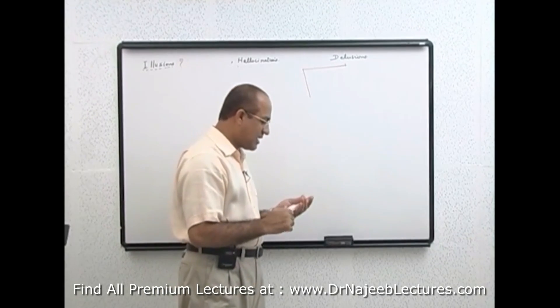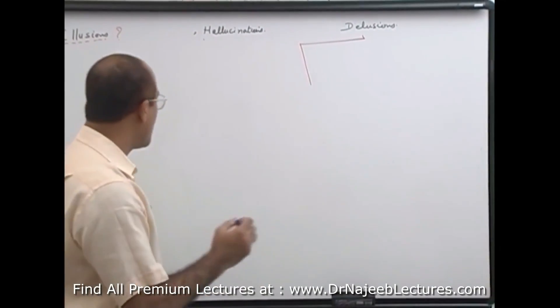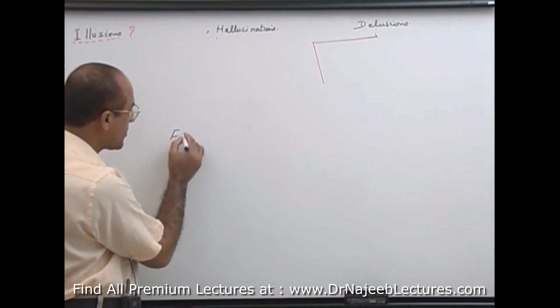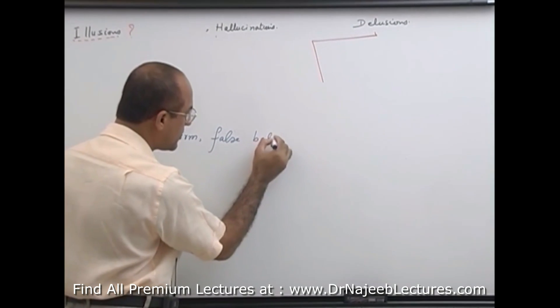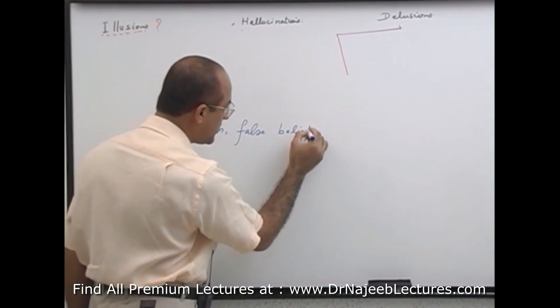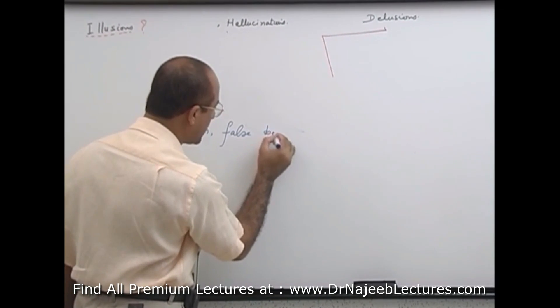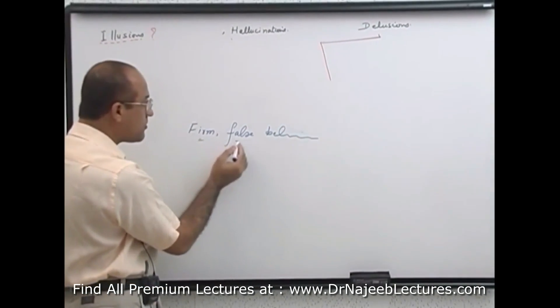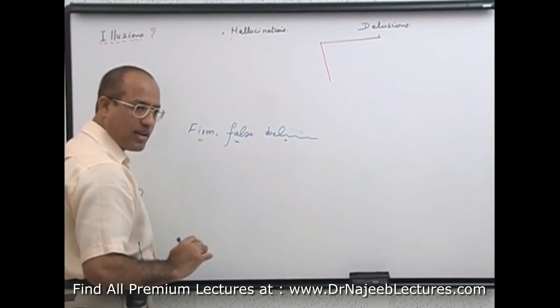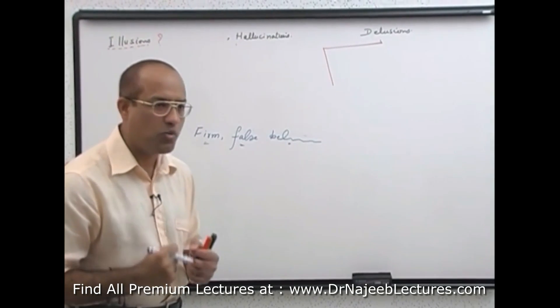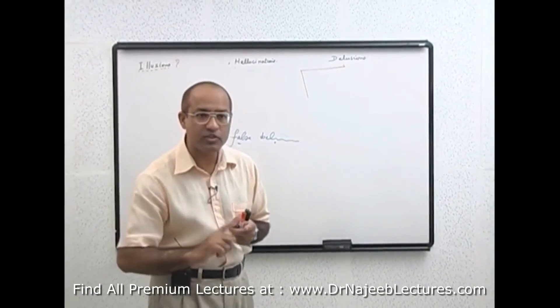Now, exactly how we define delusion. Delusions are firm, false belief. Firm, false beliefs. Which are held very strongly in spite of evidence to contrary. This is very important.